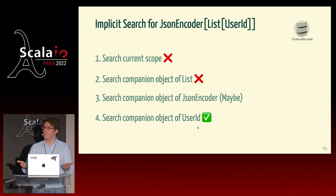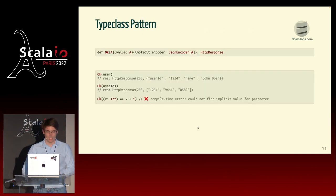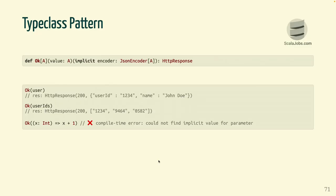If we summarize the type class pattern: we want to write a generic method but constrain it so that it works on some types but not all. The constraint is implemented by requiring a JSONEncoder to be available. That's how it works.